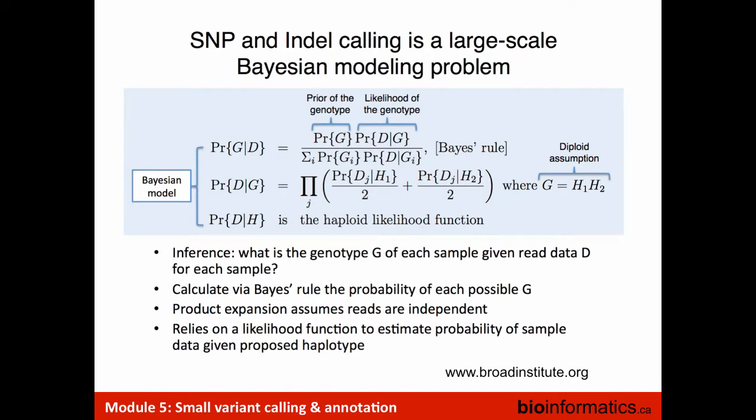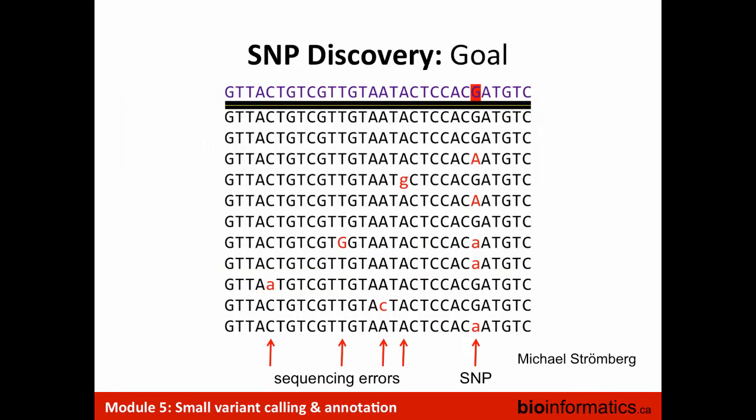I'm putting this slide up just to scare you a little bit. This is still the way variant calling is implemented mathematically. The variant calling is going to give us, for every position, the probability of the different genotypes.